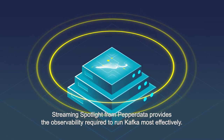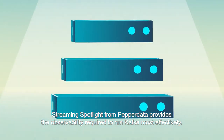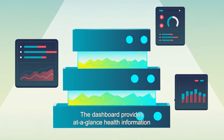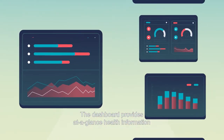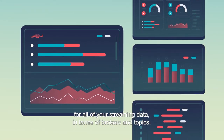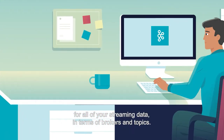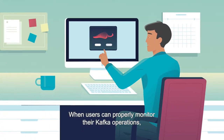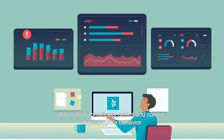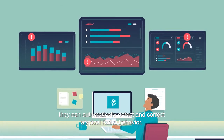Streaming Spotlight from Pepperdata provides the observability required to run Kafka most effectively. The dashboard provides at-a-glance health information for all of your streaming data in terms of brokers and topics. When users can properly monitor their Kafka operations, they can automatically detect and correct atypical Kafka behavior.